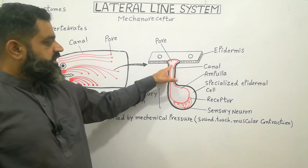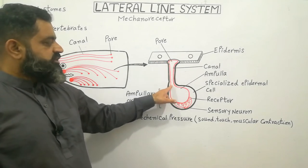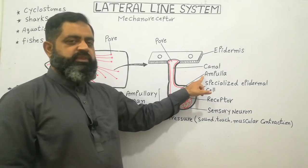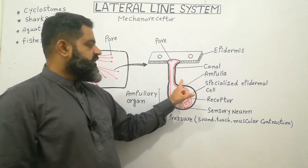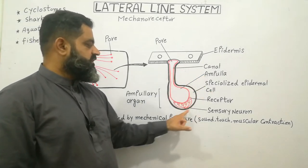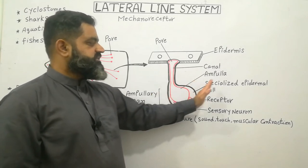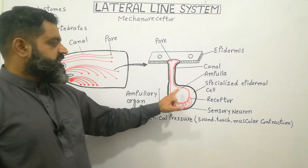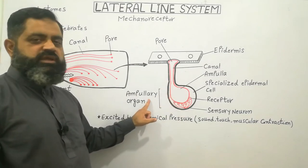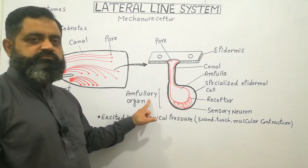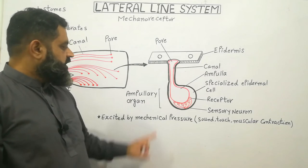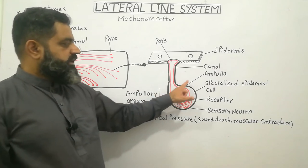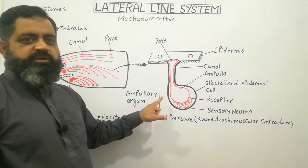These pores are just like pores present in your skin through which sweat comes out. Each pore leads into a canal, which leads into a sac-like opening known as the ampulla. The ampulla is surrounded by specialized epidermal cells, and this whole structure is known as the ampullary organ.